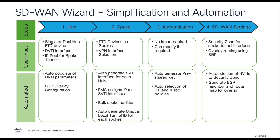The dynamic virtual tunnel interfaces and the BGP overlay configuration parameters are auto-populated by the wizard. In the second step, we define the devices for the spoke and the associated VPN interface selection. Many parameters are automated, including IP address assignment, bulk spoke addition, and auto-generating the unique local tunnel ID for the spokes.